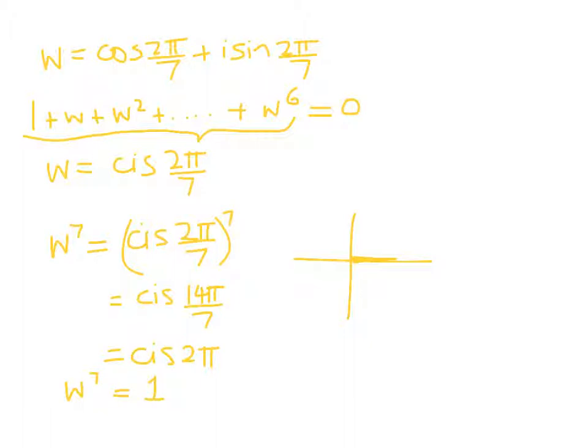So we've got w⁷ - 1 = 0. Okay, so what can I do with that? Well...